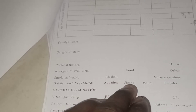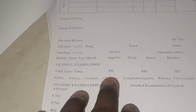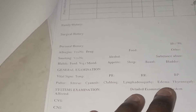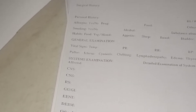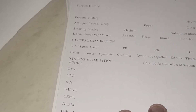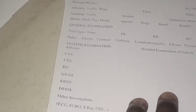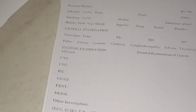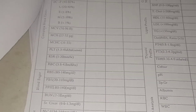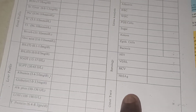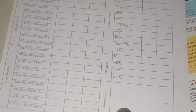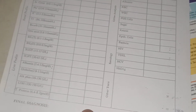The general examination section includes temperature, blood pressure, and respiratory rate. Systemic examination covers CVS, CNS, respiratory system, GI, ENT, and dermatology/skin. For any other investigations taken, you note them here. Laboratory details include hematology, blood sugar levels, renal profile, and liver profile. If any additional tests are done beyond the given form, write them in, followed by the final diagnosis.